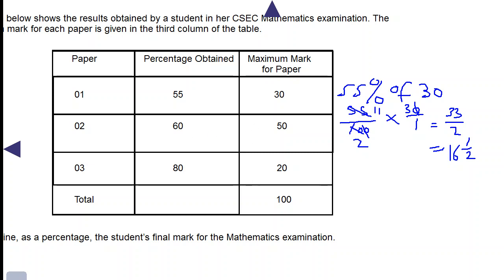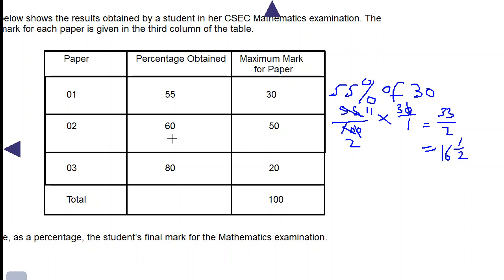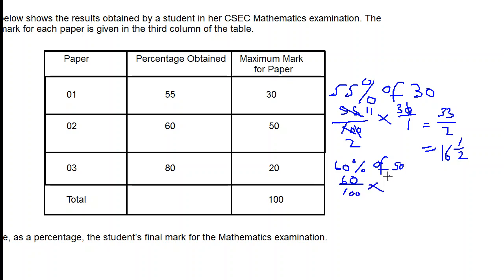Let's find the mark for paper 2 now. We have 60% of 50. So 60 over 100 times 50 over 1. Canceling zeros gives us 30. So the mark for paper 2 is 30 out of 50.